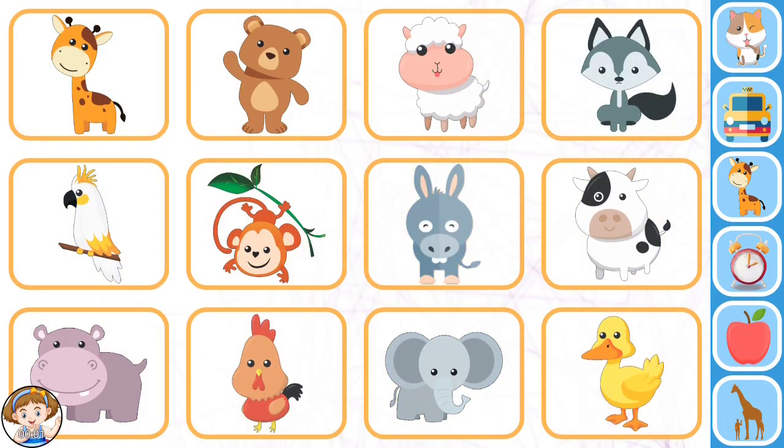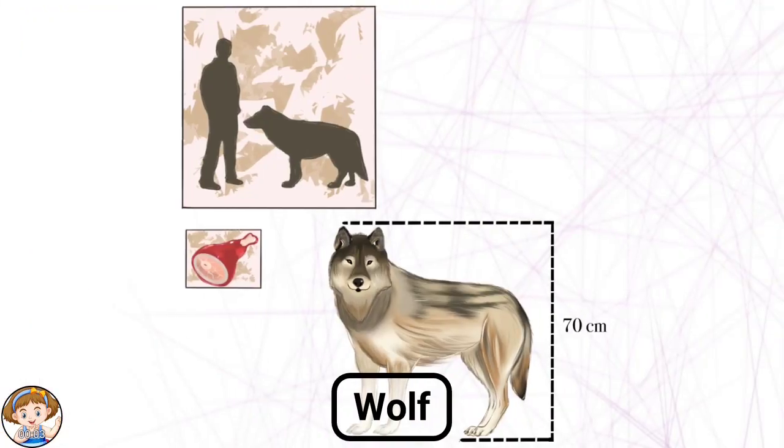Interesting facts. Wolf. Some animals appeared on the planet much earlier than others. Wolves have been living on Earth for a very long time, longer than the domestic dog.